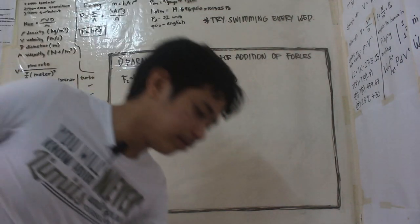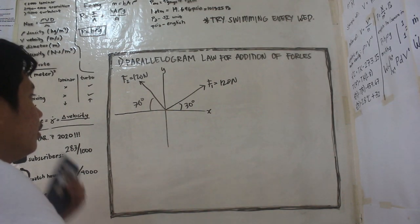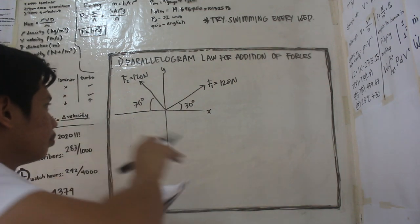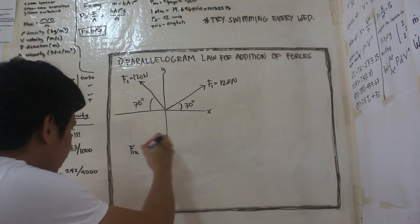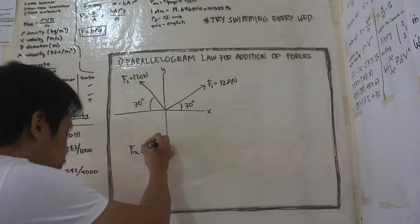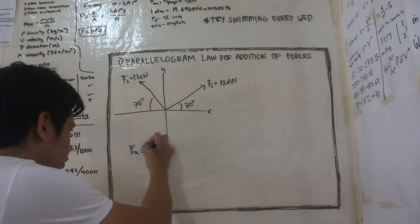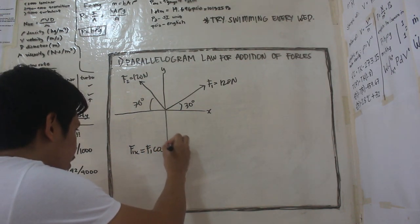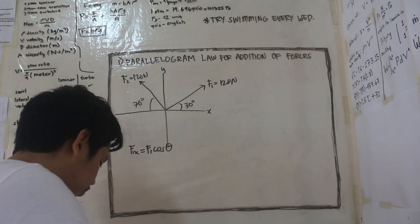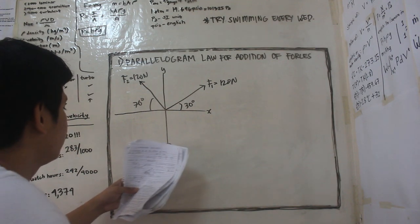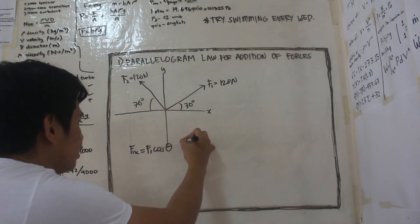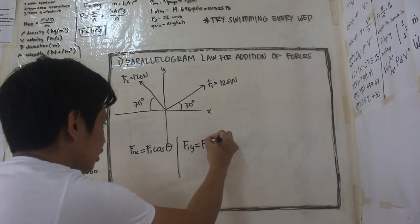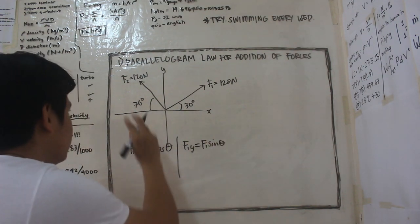So first, hanapin muna natin yung x component natin. So f1 of x is equal to f1 cosine theta. Ganoon, y, f1 of y, f1 of y is equal to f1 sine theta. Tapos ang pangalawa naman, f2 of x is equal to f2 cosine theta.